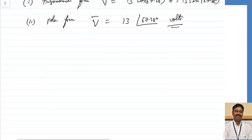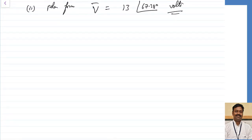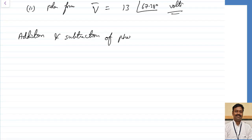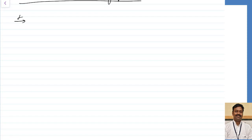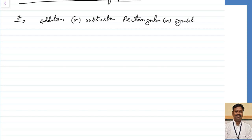Now let us see how to do addition and subtraction of phasors, and which method will be better. The thumb rule is: for addition or subtraction, the rectangular form — also called symbolic form — is best, because it is very easy to calculate.